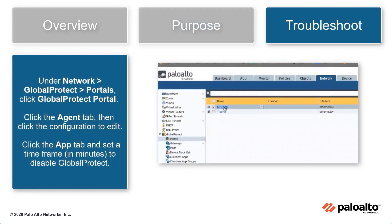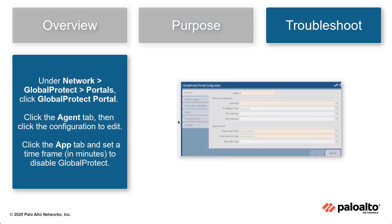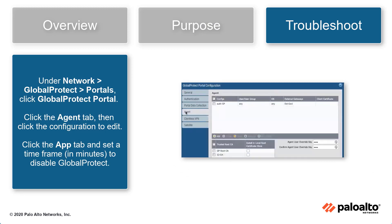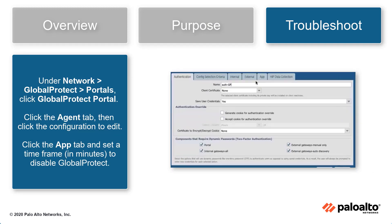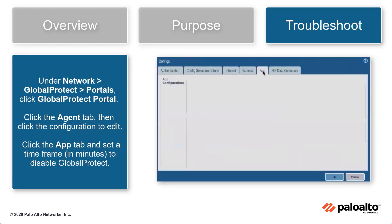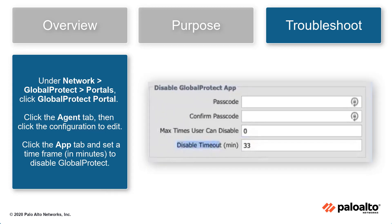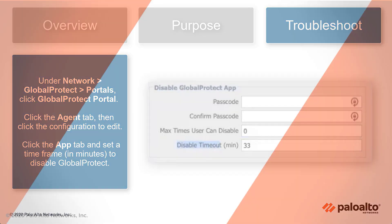Under Network, GlobalProtect, Portals, click the GlobalProtect portal, click the Agent tab, then click the Configuration to edit. Click the Apps tab and set a time frame in minutes in the Disable Timeout Minimum field. This will ensure the best practice check passes.